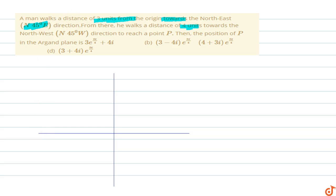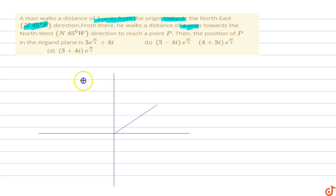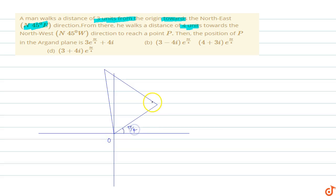Let's draw the diagram. The origin is there. Point A is at a 45 degree distance in the northeast direction — that is our first location after the origin. After that, point P also makes a 45 degree angle. We join the origin O to point P. This angle is π/4, this is 90 degrees or π/2, and this is point A.